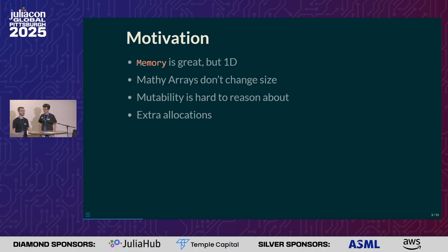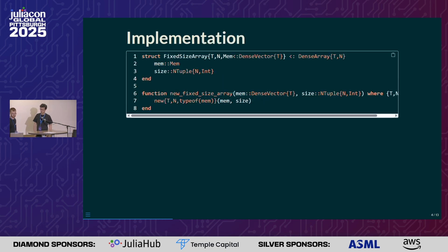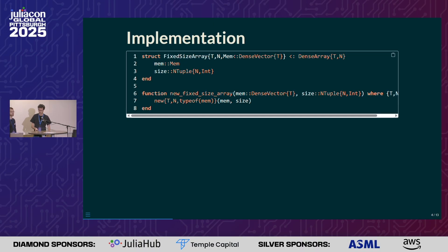Also, because array is mutable in Julia so that you can change what size it is, that means that the actual array struct needs some allocations in addition to the memory. So we created this package which implements this fixed-size array, which has the same memory layout as the standard array.